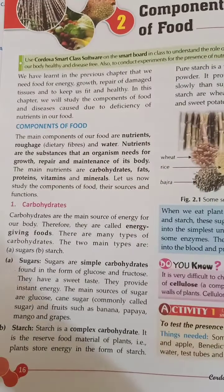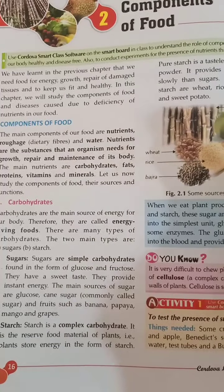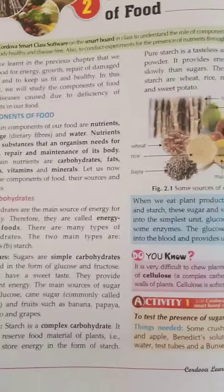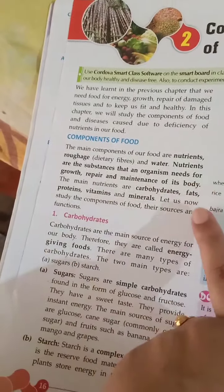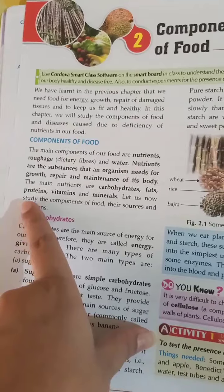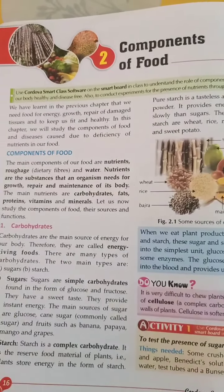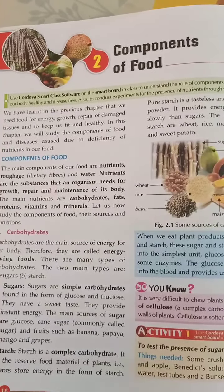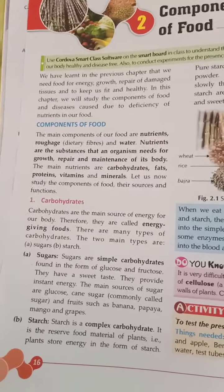The main types of nutrients present in our body are carbohydrates, fats, proteins, vitamins, and minerals. Now, one by one, we are going to study each of these nutrients in detail. First of all, carbohydrates.